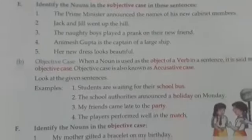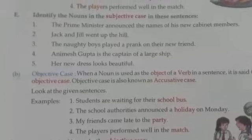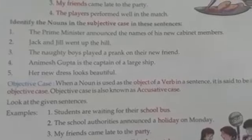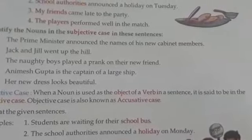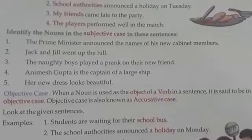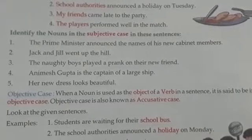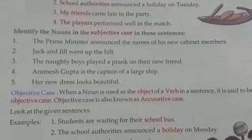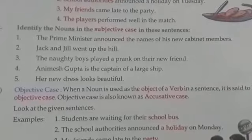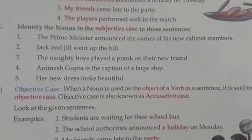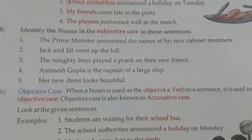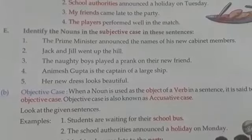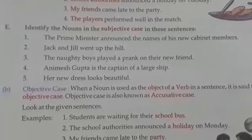Next we have the objective case. When a noun is used as the object of a verb in a sentence, it is said to be in the objective case. Objective case is also known as accusative case — when the noun is used as the receiver of the verb, it is called objective case or accusative case.